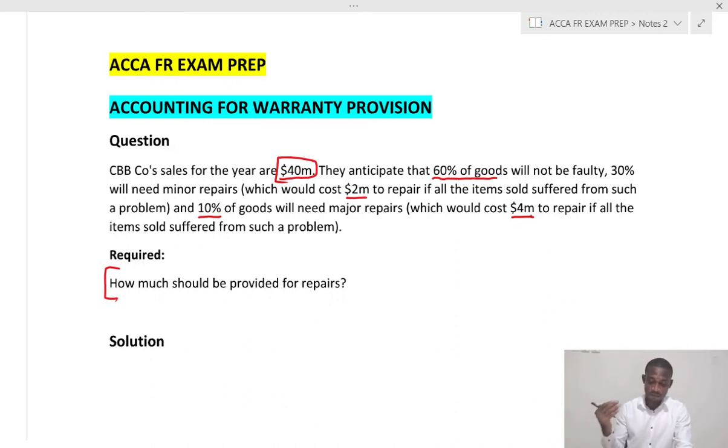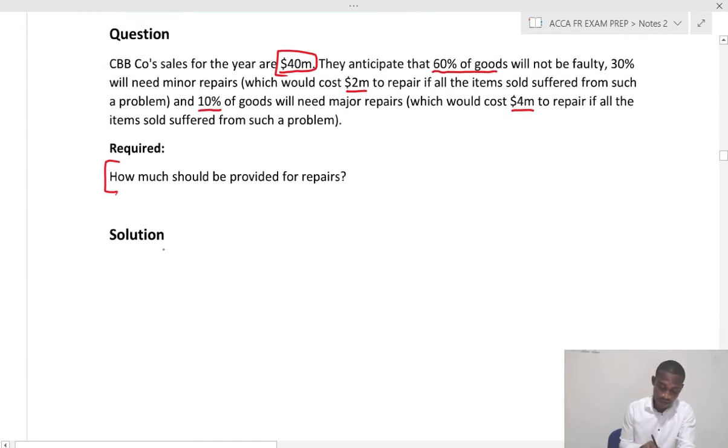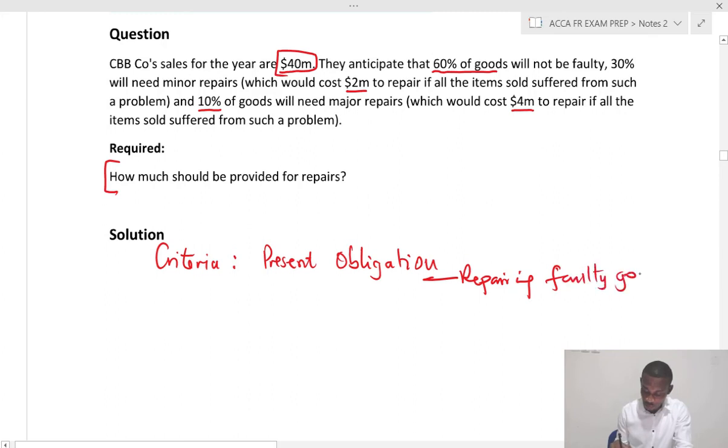So the question is, should we account for a provision? In meeting the criteria for a liability we say there should be a present obligation. Now the present obligation is that CBB is committed to repairing faulty goods. So once there is commitment we say that there is a present obligation.